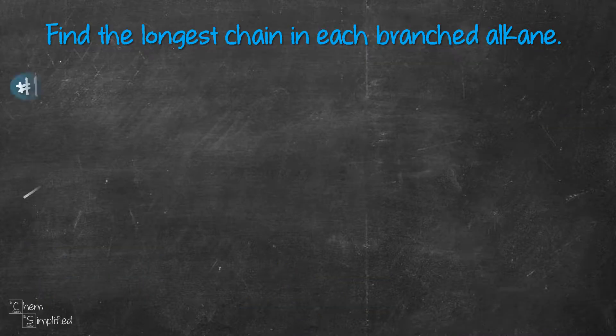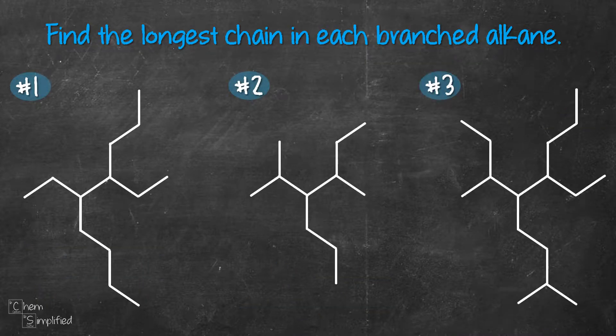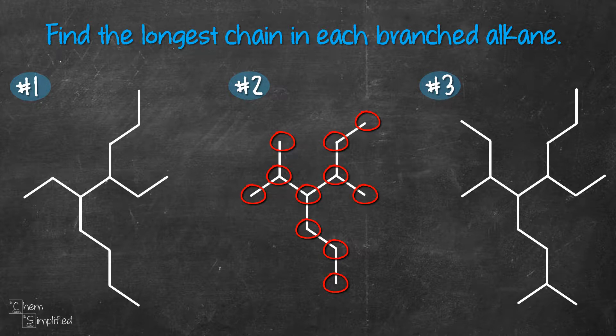These are the three branched alkanes we're going to work with. Feel free to pause the video and figure it out on your own first. If you're new to looking at structures drawn this way, just know that each point represents one carbon with hydrogens. I'll link a video on drawing structures in case you're interested.